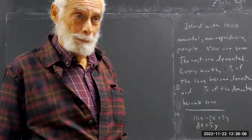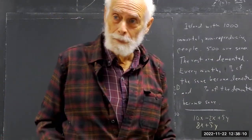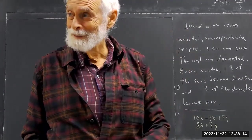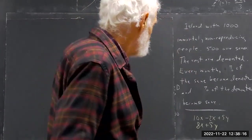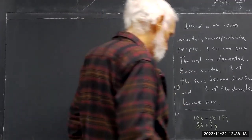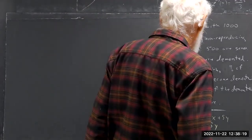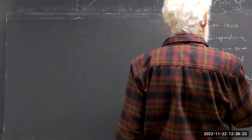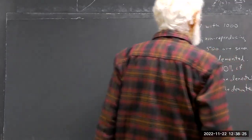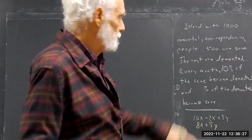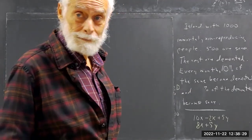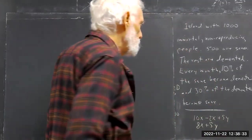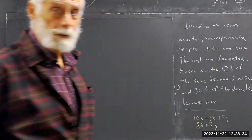So how many demented people are we going to have? 500, right? Now, every month, 10% of the sane become demented and 30% of the demented become sane.